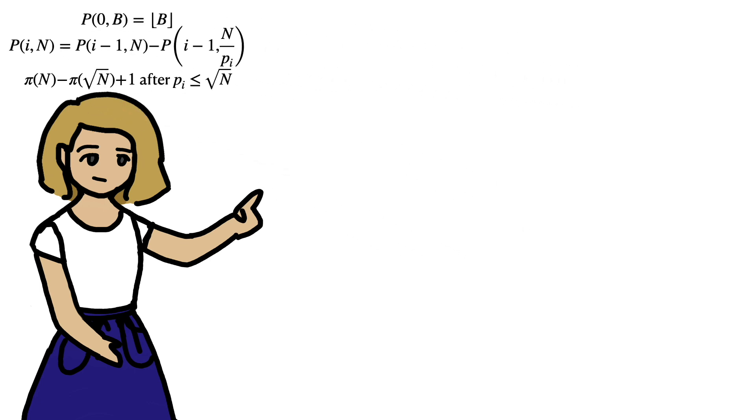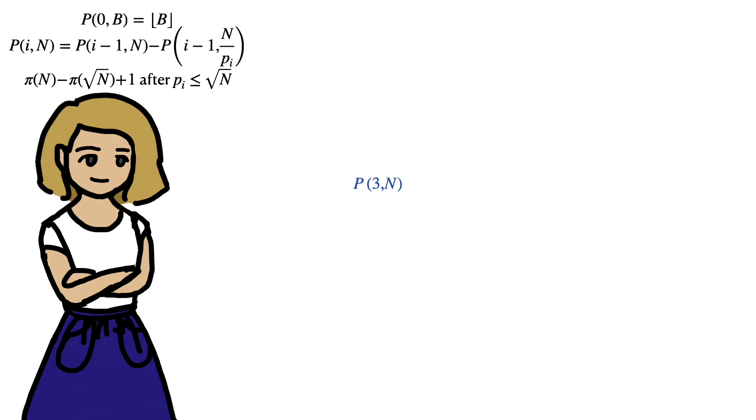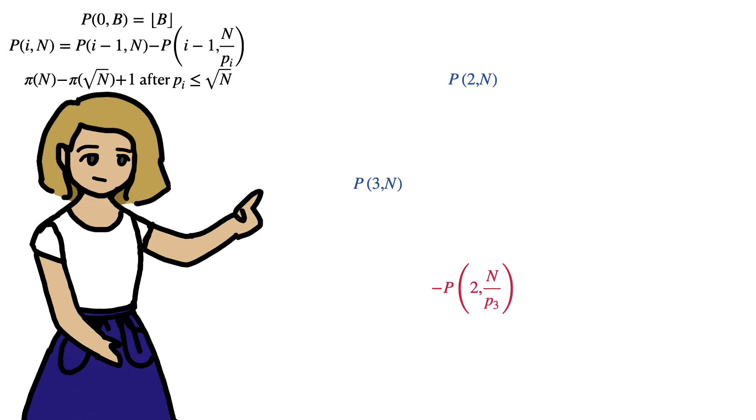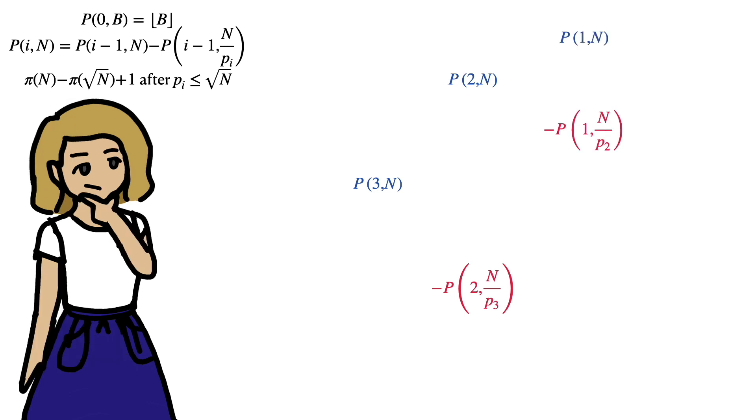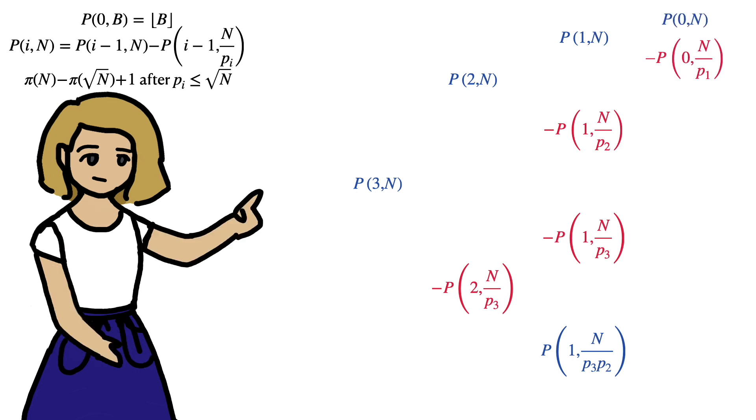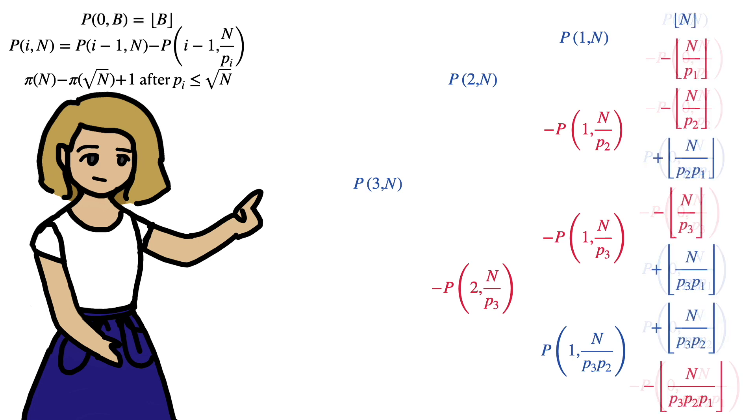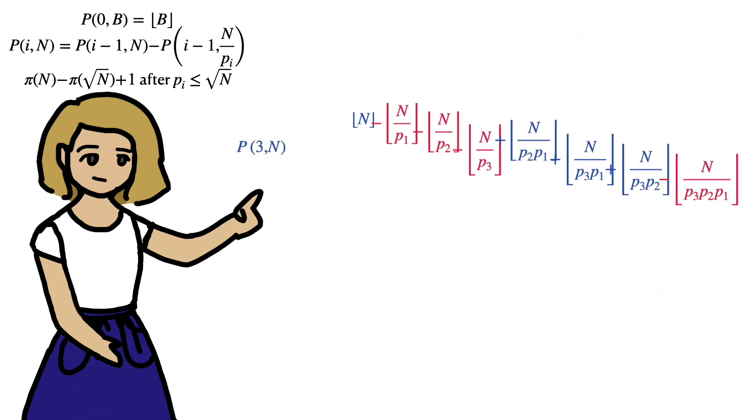So, let's run through an example. In terms of n, how many blue squares are left after three iterations? Well, using this rule, we can decompose P(3,n) like so. And we can split up P(2,n). And we can also split up negative P(2, n/p_3). And we can split up each of these as well. And now, using this rule,